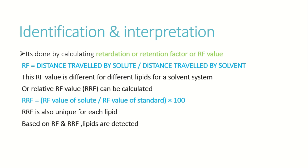For identification and interpretation, the RF value is calculated as the distance traveled by the solute divided by the distance traveled by the solvent. This RF value is different for different lipids in a given solvent system. The relative RF value is also used: one lipid is detected against a standard, and the relative RF value is compared to an already established chart.